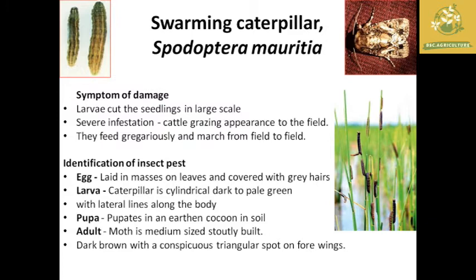The next pest is army worm or Spodoptera mauritia. This insect is the most dangerous in rice fields because the larvae cut seedlings on a large scale and show an appearance like cattle grazing in the field at night. They are also gregarious feeders that march from field to field. Once found at field level, immediate management must be taken.